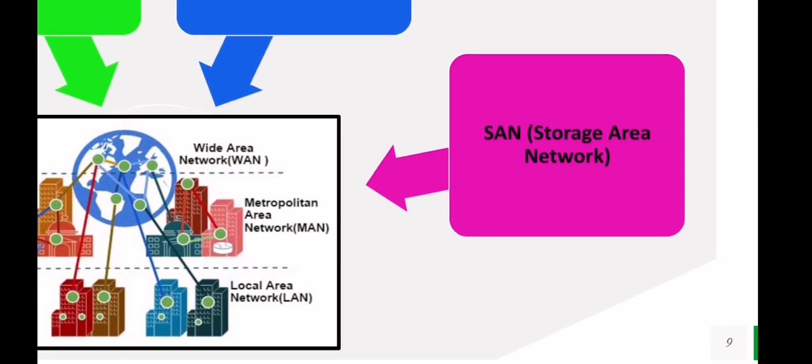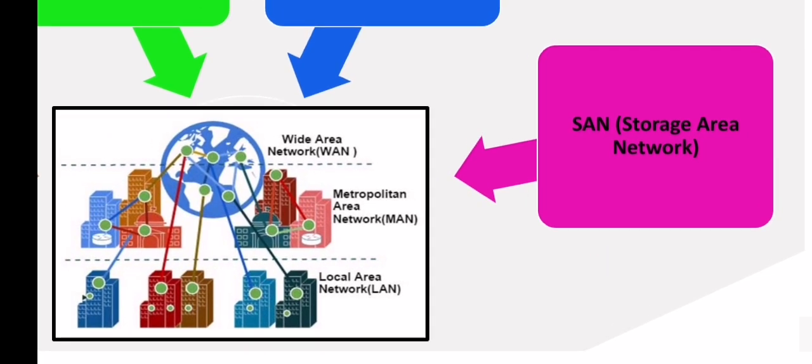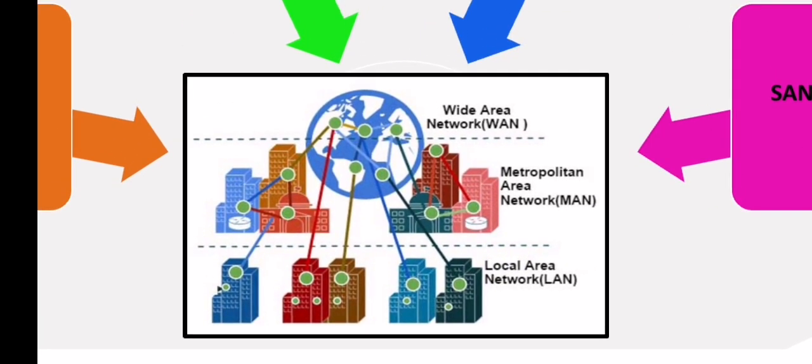Next we have the SAN or storage area network. A storage area network offers a high-speed infrastructure for moving data between physical servers and storage devices. The storage in a SAN provides virtual HDD — hard disk drive — to the servers, and the servers read and write to the disk over the network.